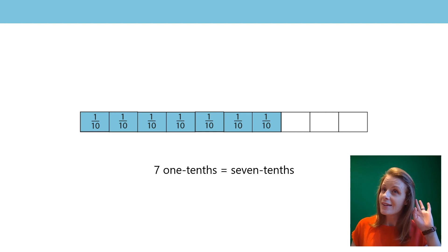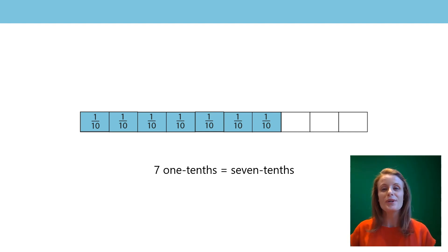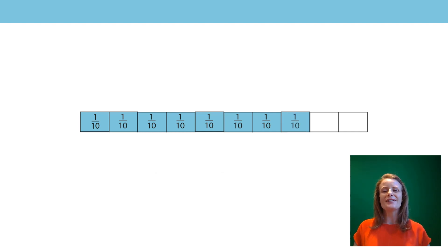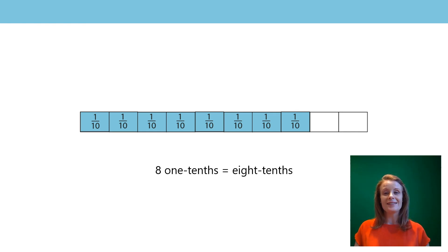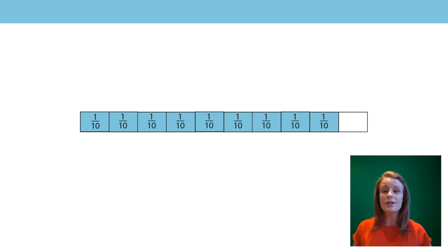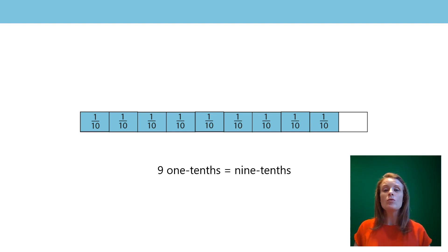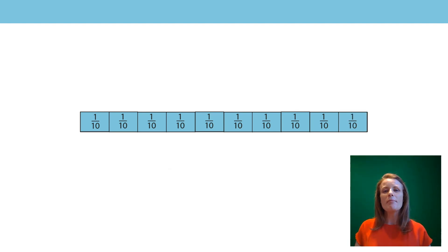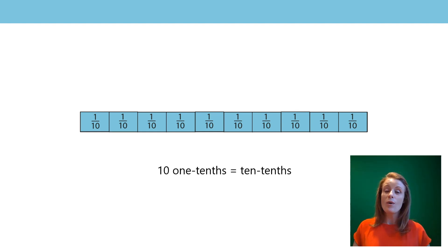And your turn. I put the words on the screen — did you notice? We'll say this one together. I'm not going to put the words up yet. Say with me: eight one tenths, or eight tenths. There they are, the words as well. Your turn, without the words. Together: nine one tenths, or nine tenths. And now when my bar is full, how many tenths? Ten one tenths, or ten tenths. Well done.